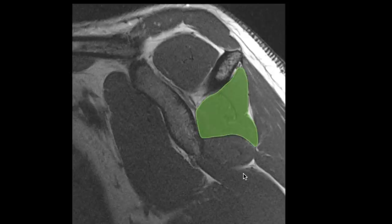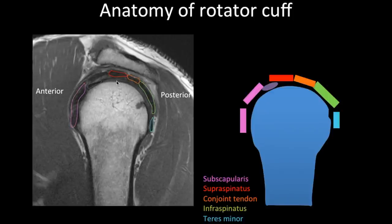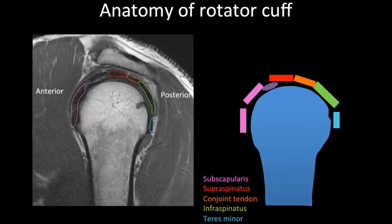The superior one is infraspinatus and the inferior one is teres minor muscle. When you come laterally you start to see the humeral head with the rotator cuff tendons around it. At approximately the 12 o'clock position you have the supraspinatus tendon and the conjoined tendon. Anteriorly is the subscapularis tendon. Anterosuperiorly is the biceps tendon abutting the humeral head, and the infraspinatus tendon and teres minor tendon are also visible. Note that subscapularis is a multipinnate tendon with multiple tendons.